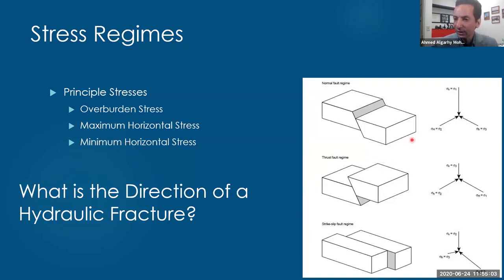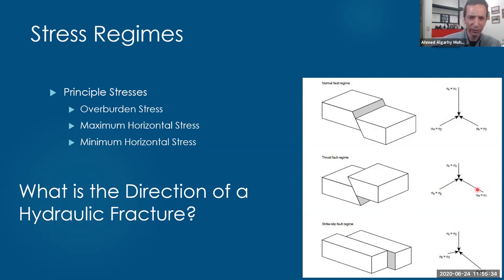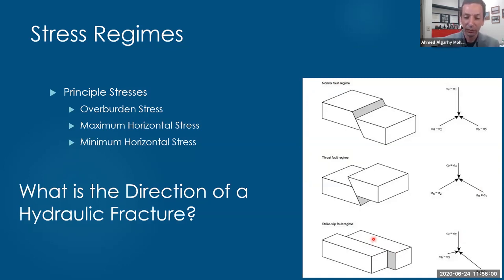If you are studying geology, you will get three famous types of faults. The first one: the movement is downward - it means the overburden is larger than the maximum and minimum horizontal stress, and this is why the weight pushes this rock downward. This is the normal fault regime. If the minimum and maximum horizontal stresses are larger than the overburden, you see the movement is upward - we call it a reverse fault or thrust fault regime. If the overburden magnitude is in between the maximum and minimum, we see the movement parallel to the strike - we call it a strike-slip fault regime.